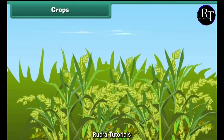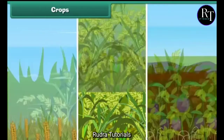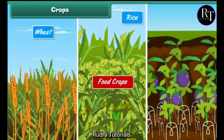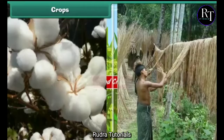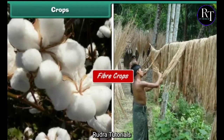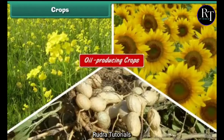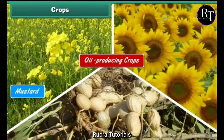Crops. Several plants grown in fields by farmers that are useful in various ways are known as crops. Crops are mainly of three types: food crops, e.g. wheat, rice and vegetables; fiber crops, e.g. cotton and jute; and oil producing crops, e.g. mustard, sunflower and peanut.